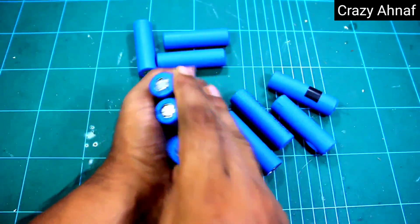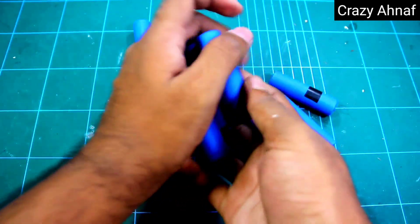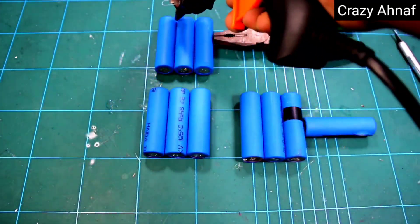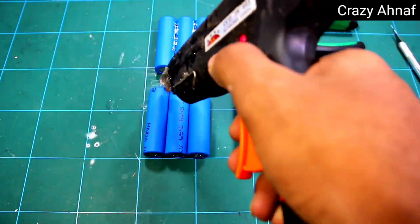Out of the nine batteries we will now take three batteries separately. Three battery positive on one side and three battery negative on the other side like this. Next we will join with the glue gun.